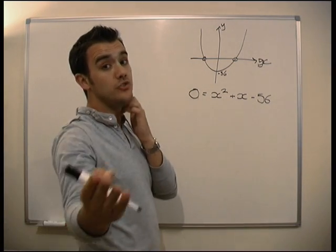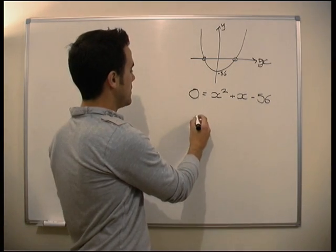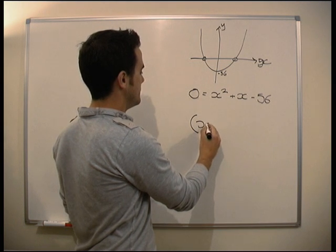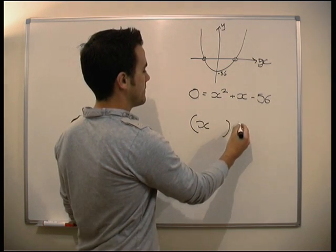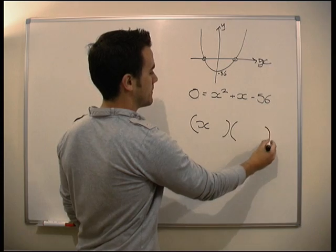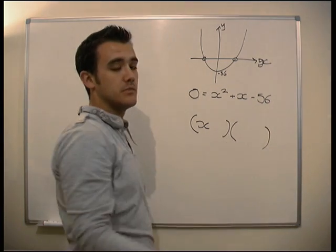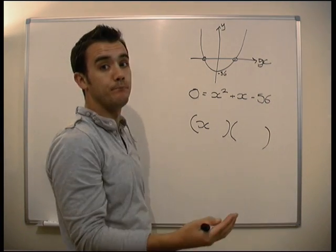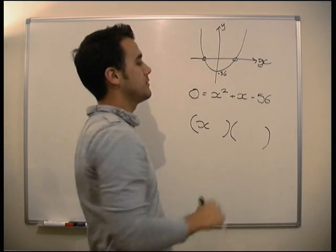That's how we're doing that. You should be pretty good at that by now. Let's put our brackets here. We've got minuses. It's going to be a plus and a minus. We don't know which one yet. We need two numbers that times together make 56.